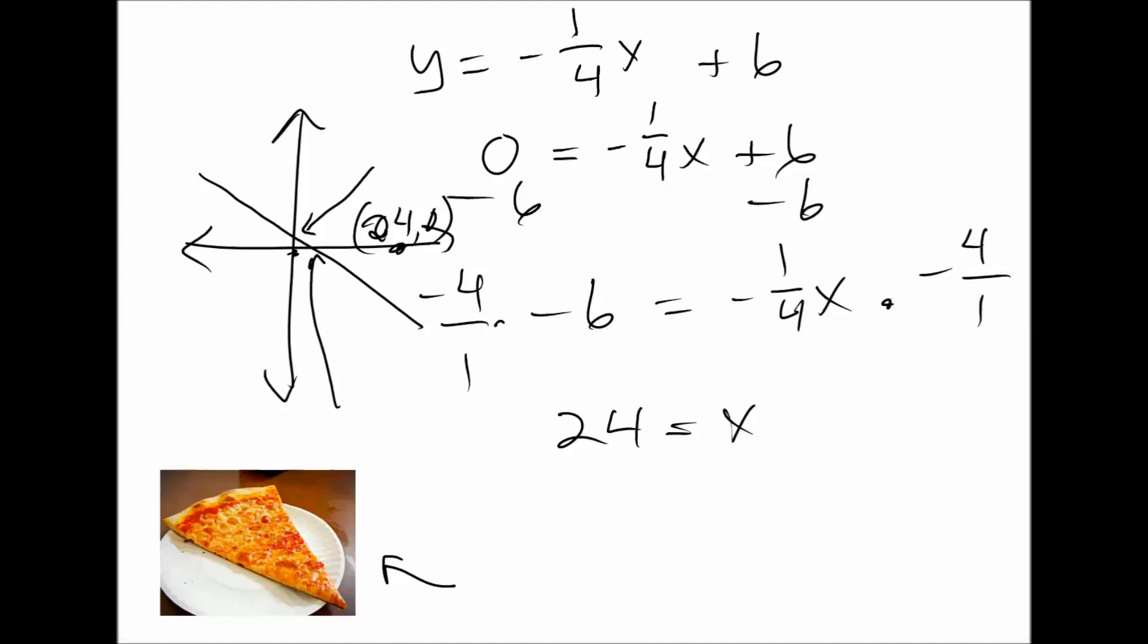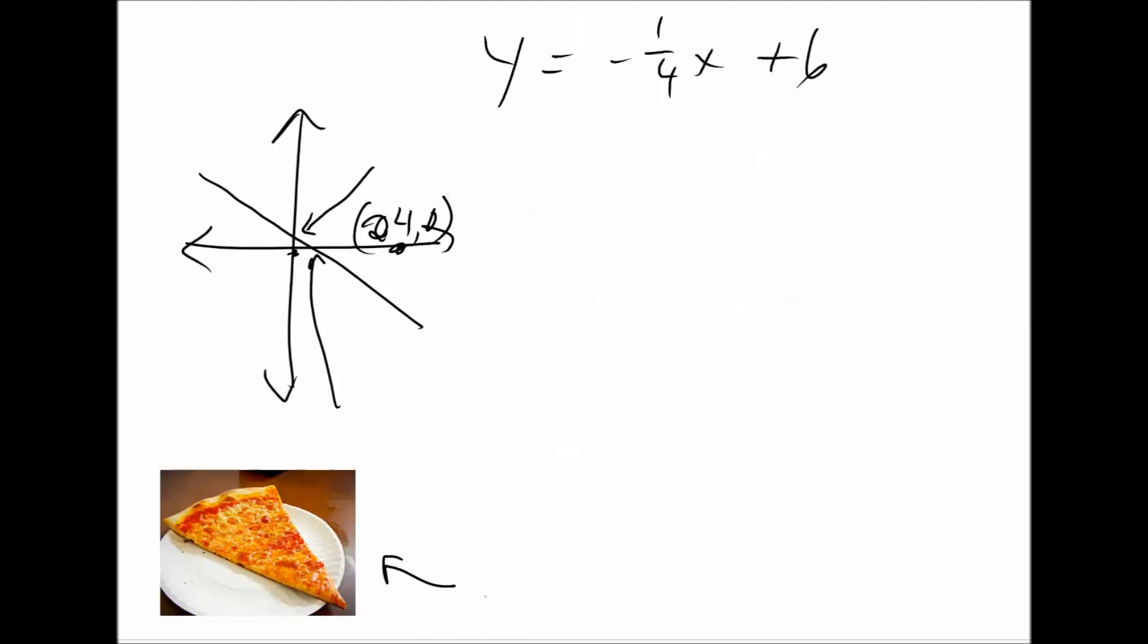Okay, we're also going to do the same thing for the y-intercept. And I'll use a different color for this one. So to find the y-intercept, we put x at 0. So we put x at 0 and solve it. Well, you know that anything times 0 is 0. So we have 0 plus 6. x is equal to 6.